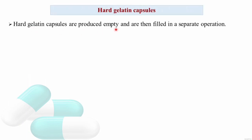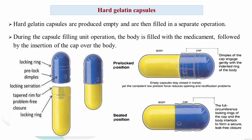Hard gelatin capsules are produced empty first — the body and cap are produced separately and then filled in a separate operation. During filling, the body is filled with the medicament, and then the cap is inserted and locked. The pre-locked dimples of the cap engage gently with the indented ring of the body. In the sealed position, the full circumference of the locking rings of the body and cap form an interlock to secure a leak-free closure.